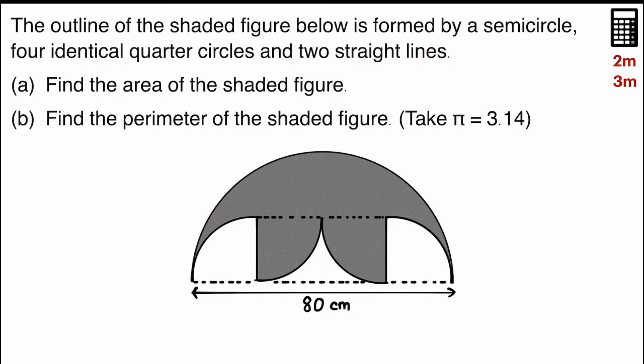The outline of the shaded figure is formed by a semicircle. So this is the semicircle that they are referring to. And four identical quarter circles. So where are the four identical quarter circles? There's one here that's in white,